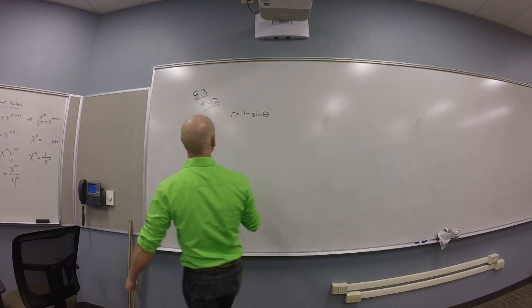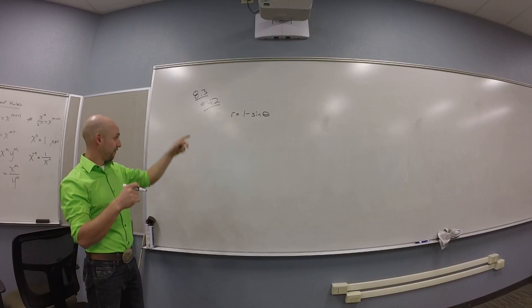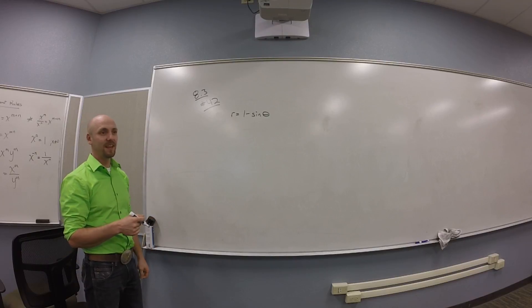Alright, so let's try number 42 in section 8.3. We want to eventually graph r = 1 - sin(theta).